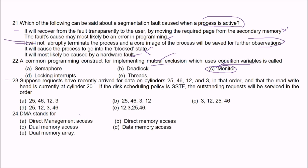Question 23: Requests have recently arrived for data on cylinders 25, 46, 12, and 3 in that order, and the read-write head is currently at cylinder 20. Using SSTF (Shortest Seek Time First) disk scheduling, the head is at 20. Taking the difference from all cylinders: 25 minus 20 is 5, which is the minimum. So it will go to 25 first.